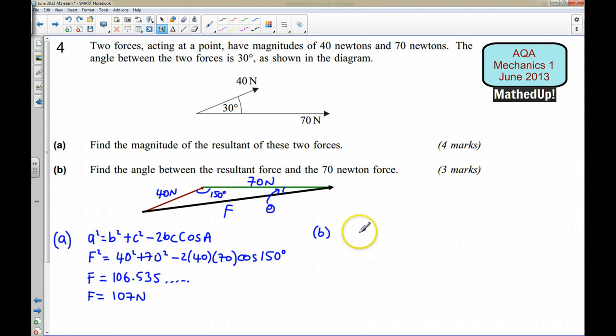Now when I'm writing the sine rule, I like to write the unknown on the numerator. So I'm going to say that sin θ, the sine of this angle here over 40, is going to be equal to the sine of 150 divided by F.